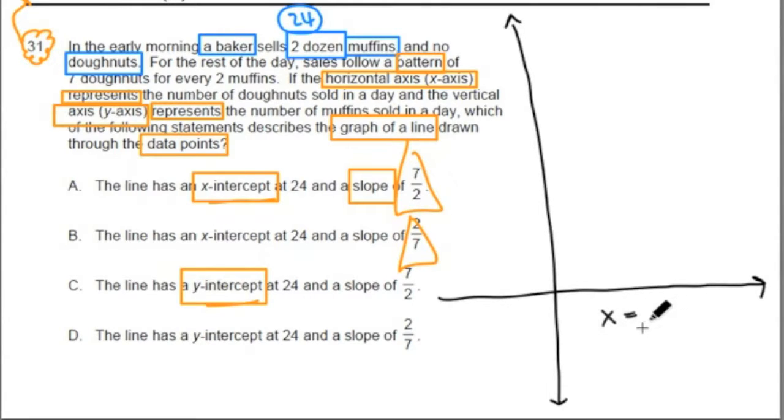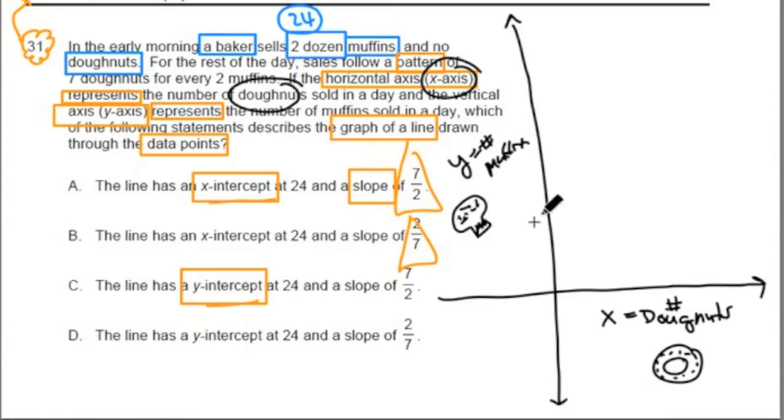This is our input, so we're going to say our horizontal axis inputs are the doughnuts, the number of doughnuts. And the y-axis is the number of muffins.